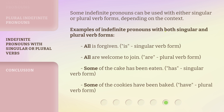"All is forgiven" — "is" is the singular verb form. "All are welcome to join" — "are" is the plural verb form. "Some of the cake has been eaten" — "has" is the singular verb form. "Some of the cookies have been baked" — "have" is the plural verb form.